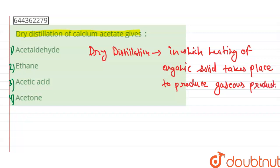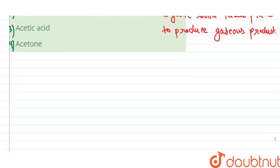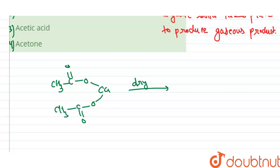Now when calcium acetate undergoes dry distillation, calcium acetate is written as CH3-C=O-O-Ca-O-O=C-CH3. When it undergoes dry distillation,